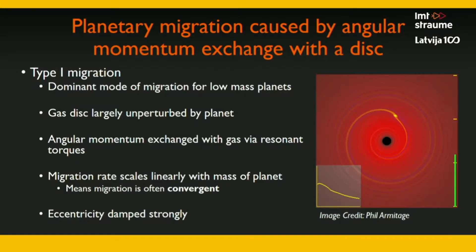What this means is that if you have two planets in the disk — say a lower mass one here and a higher mass one somewhere further out — the higher mass planet will migrate more quickly and will tend to catch the lower mass planet, which is going to be very important in a moment.